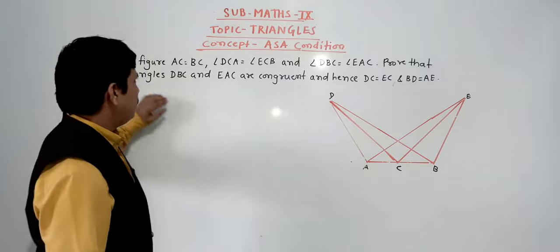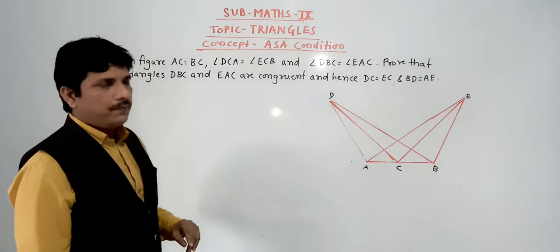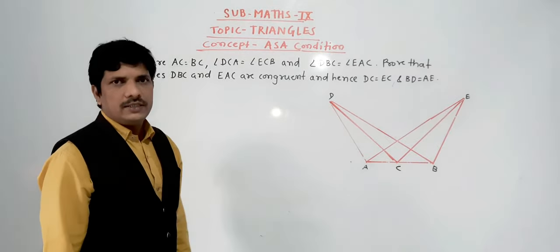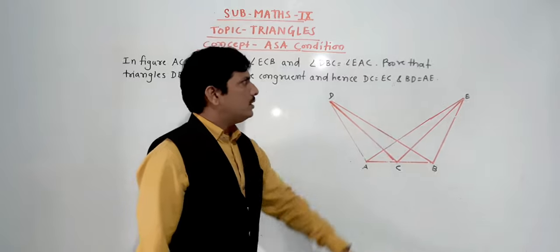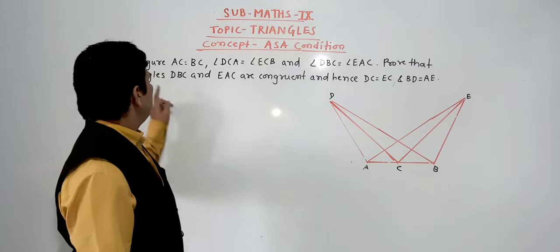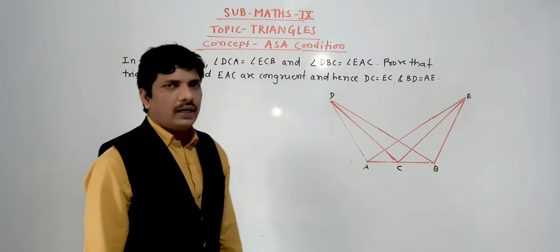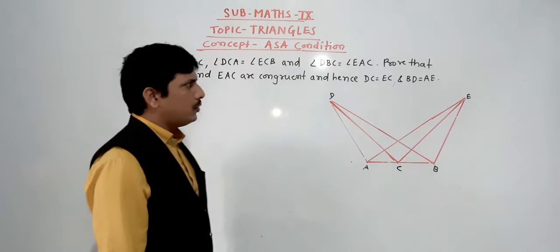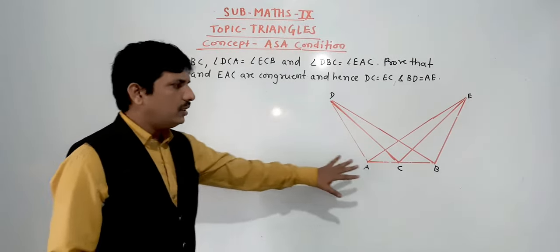See here — the problem is given in the figure. AC is equal to DC. Angle DCA is equal to angle ECB. Angle DBC is equal to angle EAC. We need to prove that triangles DBC and EAC are congruent, and hence DC is equal to EC and BD is equal to AE.